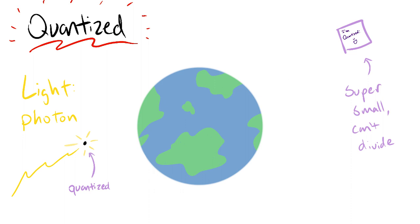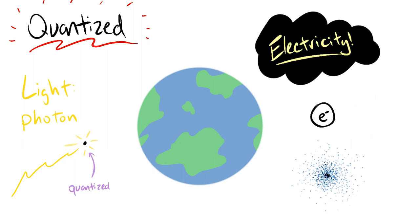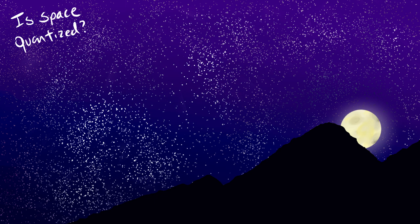For light, we have photons. For electricity, it's an electron. But what if space and time itself was quantized? According to the theory of loop quantum gravity, it is. It makes sense, too.